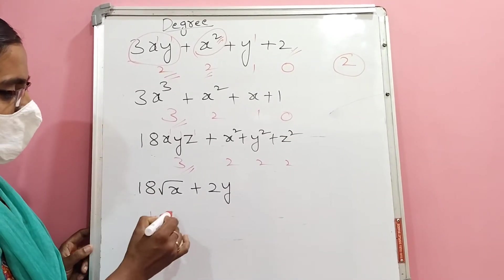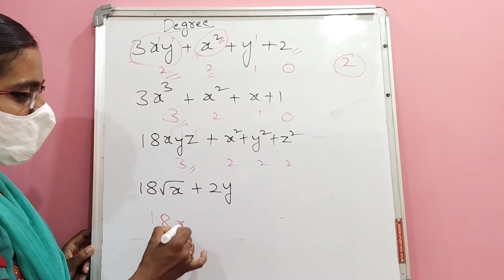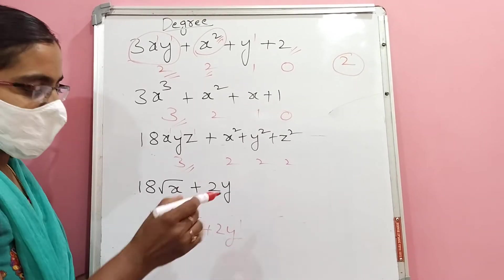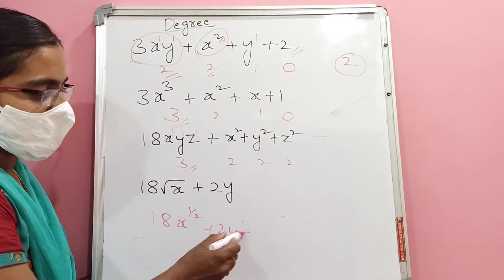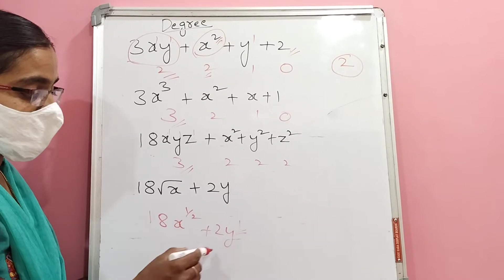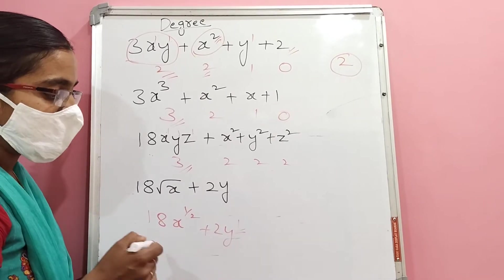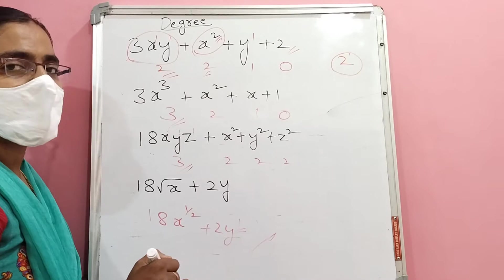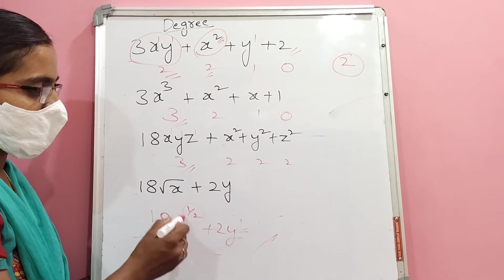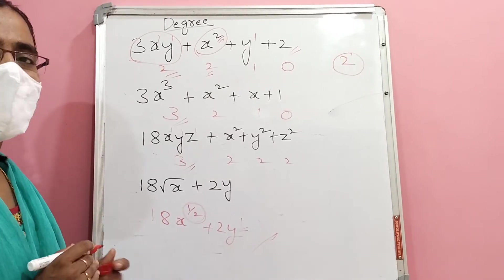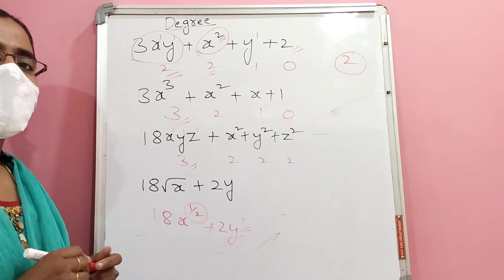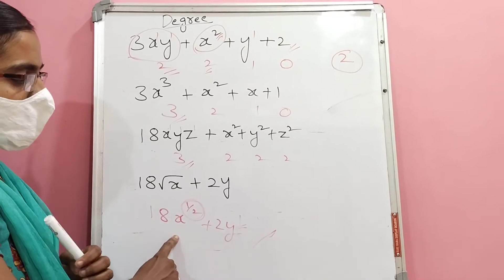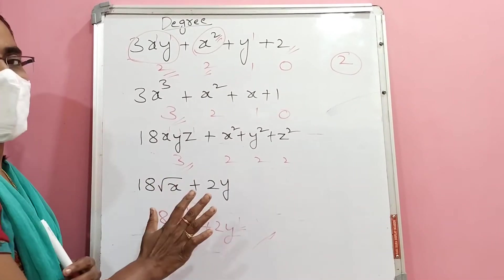Consider square root of x, meaning x to the power 1/2, plus 2y. Here degree of the 2y term is 1, which is highest, but this whole expression is an algebraic expression, not a polynomial, because the power 1/2 is not an integer. Only non-negative integer powers qualify it as a polynomial.